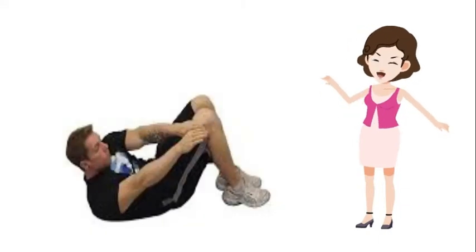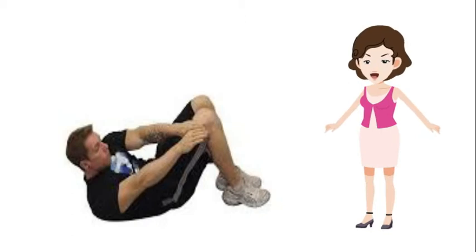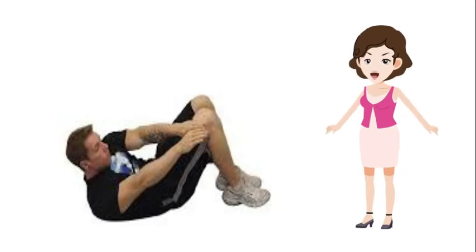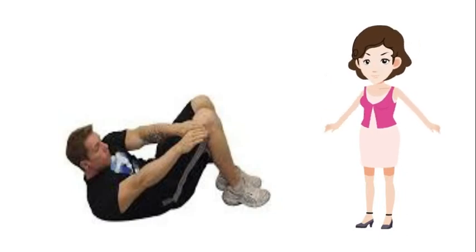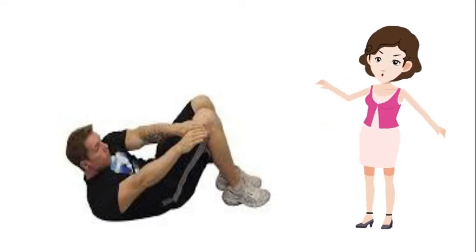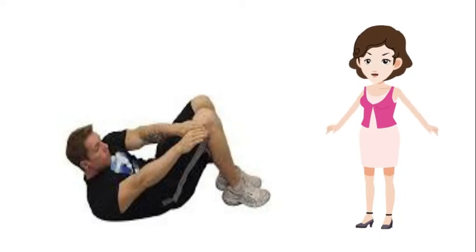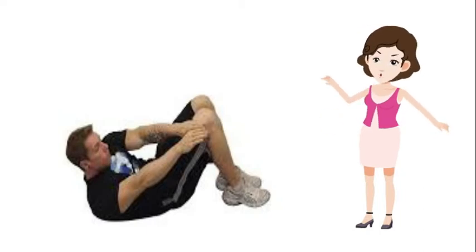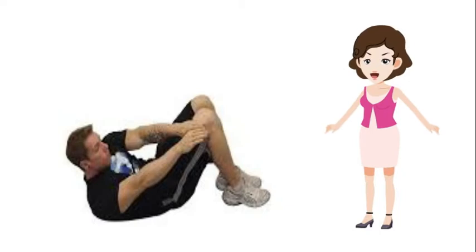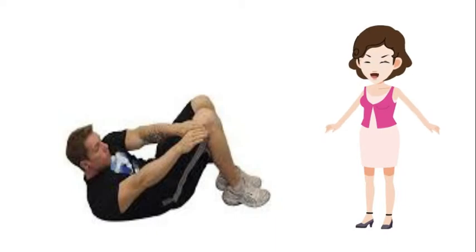Alternate reach and catch works on the transverse abdominis and rectus abdominis muscles. Lie flat and bend the knees. Move both hands toward your left thigh, reaching for your knee. Return back to the initial position. Repeat this move on your left side. Repeat 10-12 times on each side.